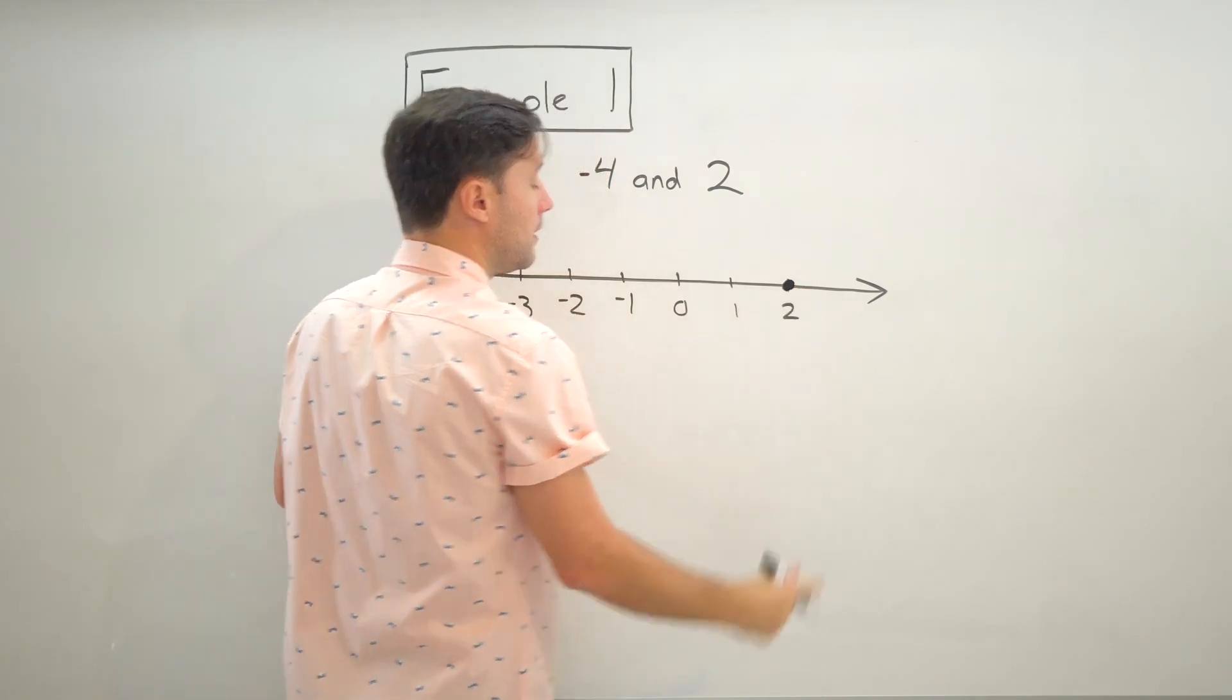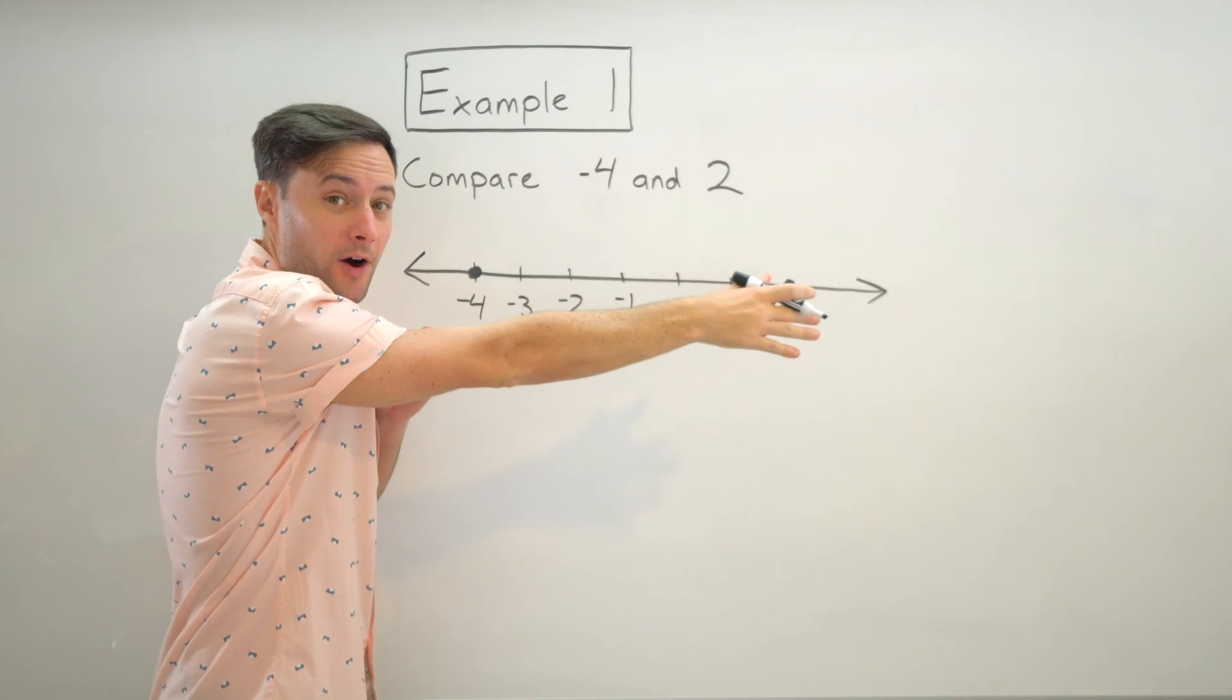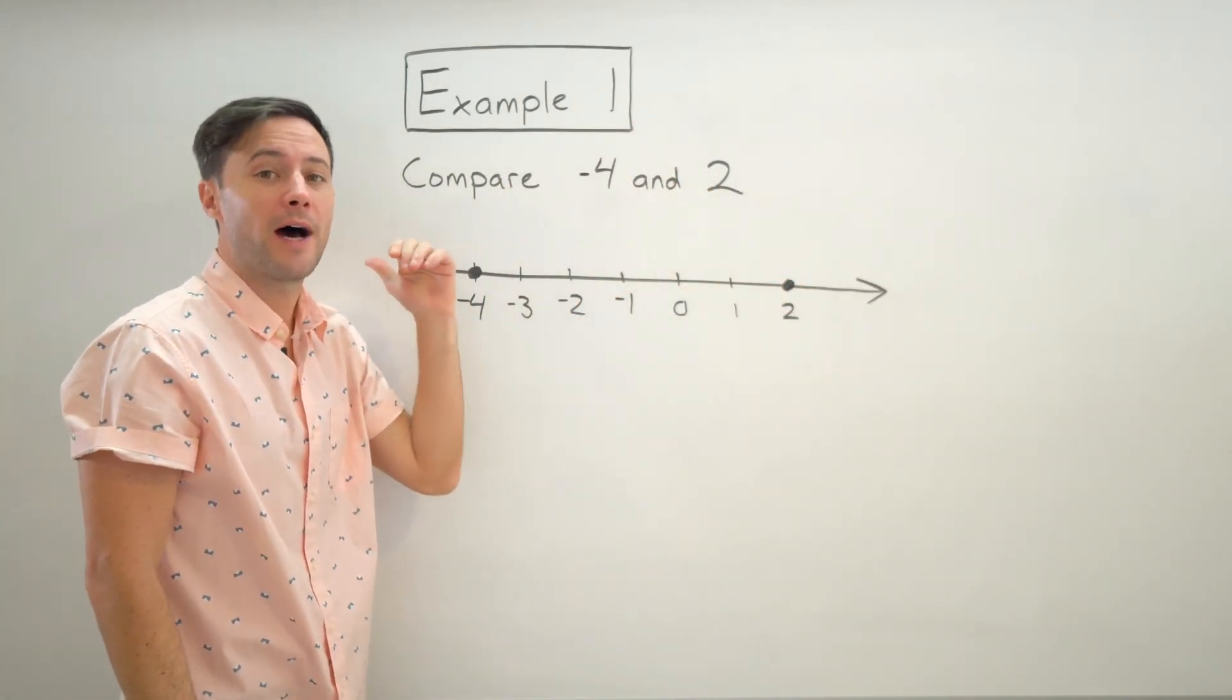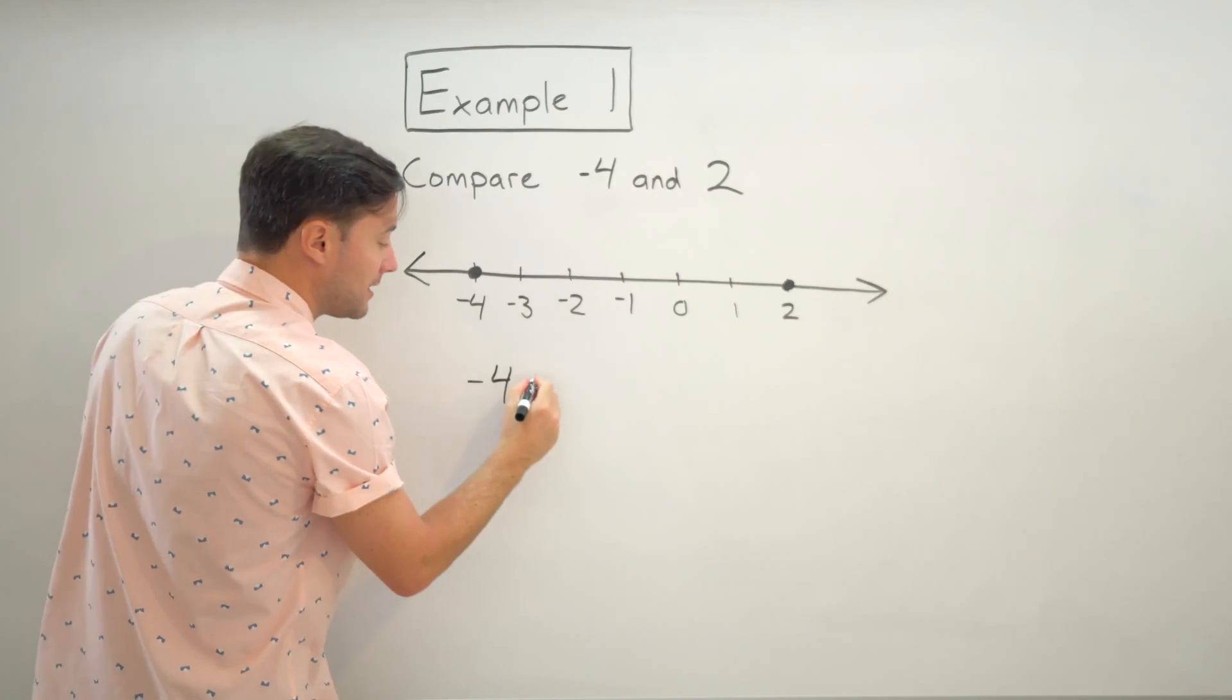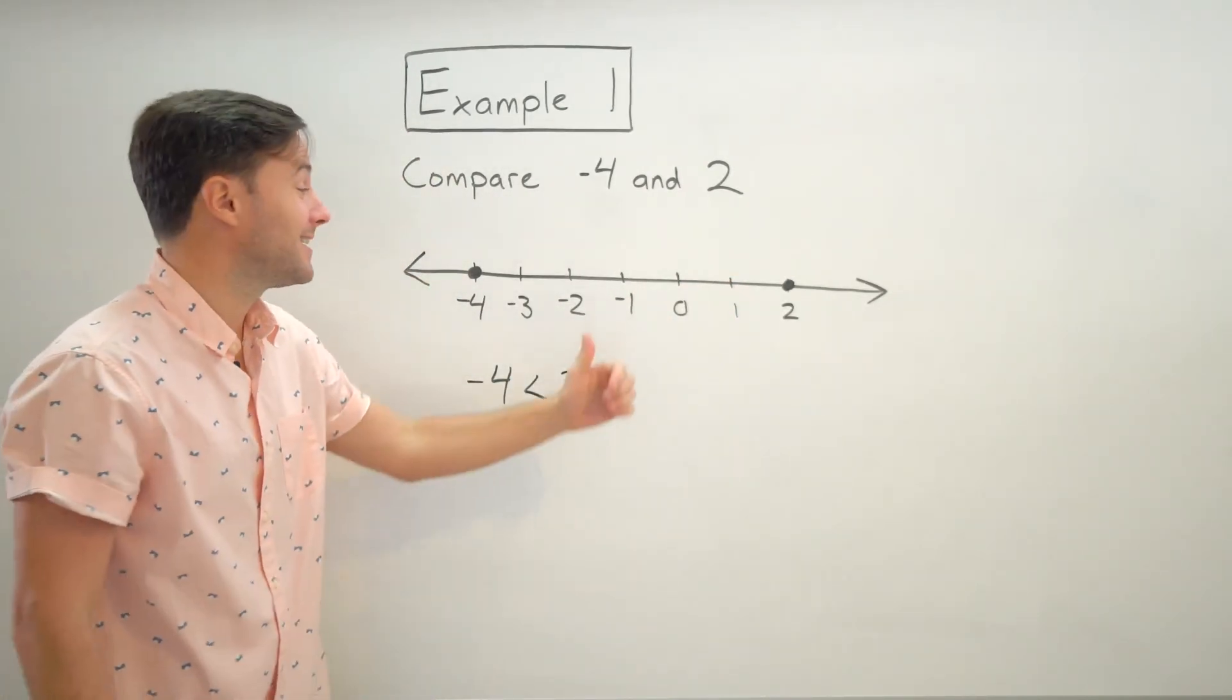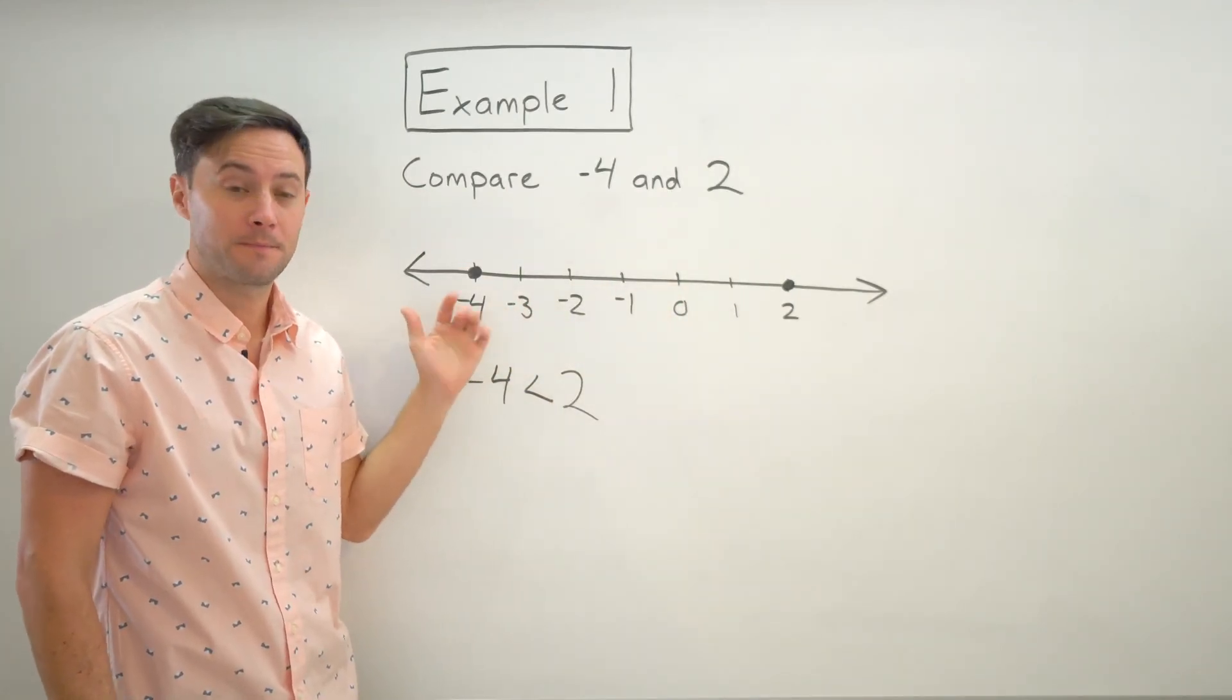Well, we know that as you move to the right on the number line, the values increase. And as you move to the left, the values decrease, which means negative four has to be less than two, because it's to the left of two on the number line.